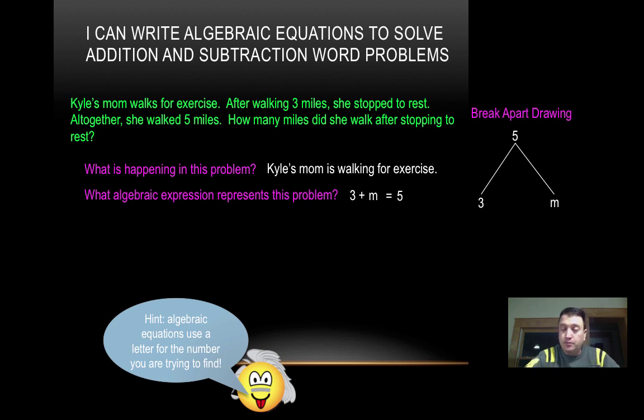Now, you can also use a break-apart drawing for this, and you might remember this when you were in fourth grade last year. Our break-apart drawing just simply puts the total, or in this case, the total of the addition problem goes at the top, and the two addends go down here below. So three and M are our addends, and five is our total here.